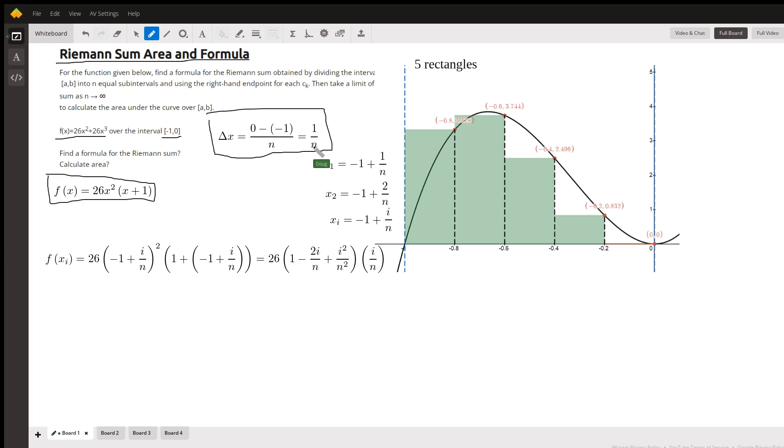Each rectangle will have that width—that's Δx. Instead of using c_k, I used x_i for the right-hand endpoint. Picture starting at negative 1, and to get to the right-hand endpoint for the first rectangle you add on one of these widths. To get to the second endpoint you add on two of these widths.